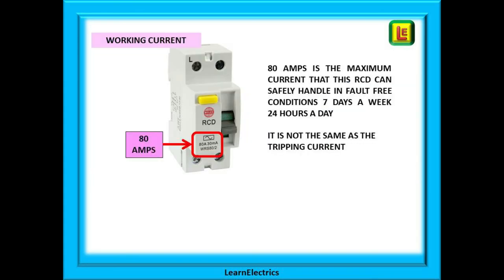What then is the working current of an RCD? On the front we will find some numbers — in this case 80 amps and 30 milliamps. The 80 amps is the working current: it is the current that can safely pass through the RCD seven days a week, 24 hours a day. If this value is exceeded and the phase and neutral are still the same value, the RCD will not trip. An RCD does not offer any overload protection and must be installed with a circuit breaker or a fuse. Working current is not the same as tripping current.